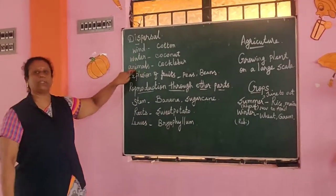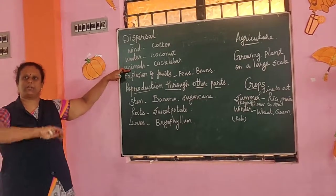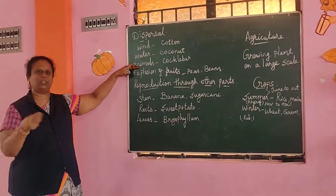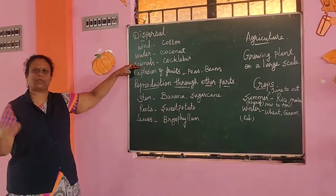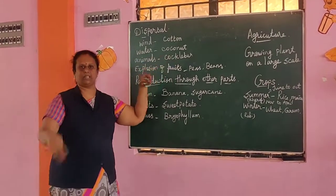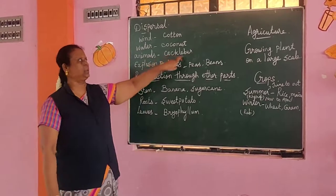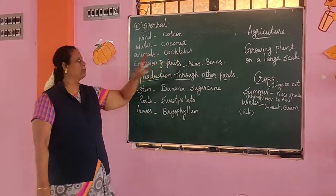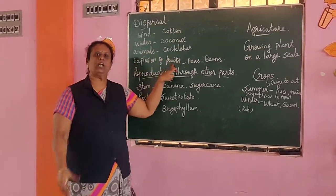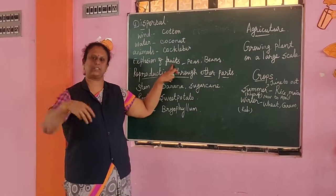Dispersal by animals — animals carry seeds, and new plants grow from those seeds. For example, cocklebur. Next is dispersal by explosion of fruits — fruits burst open and seeds are released.